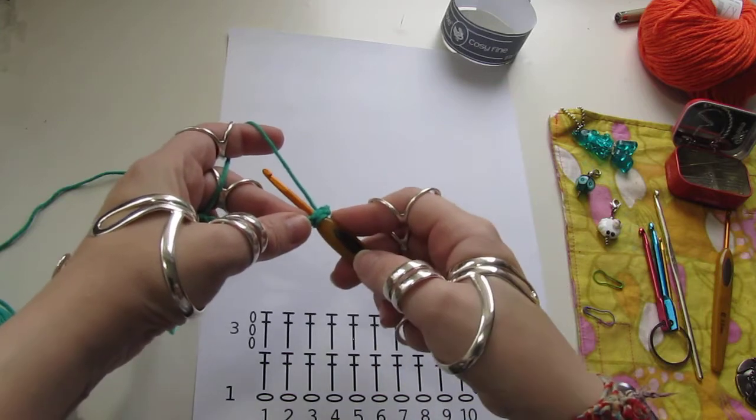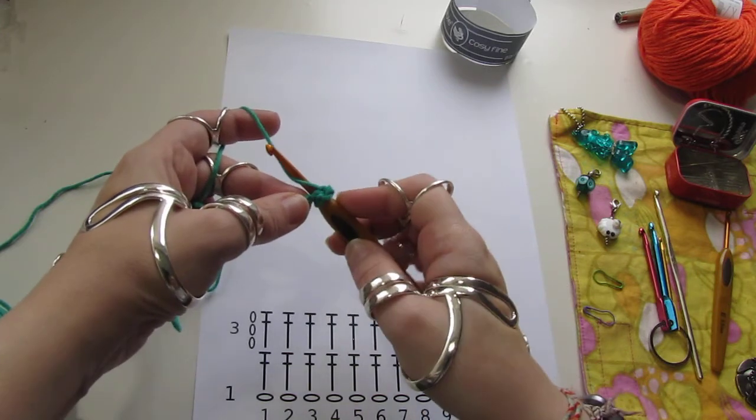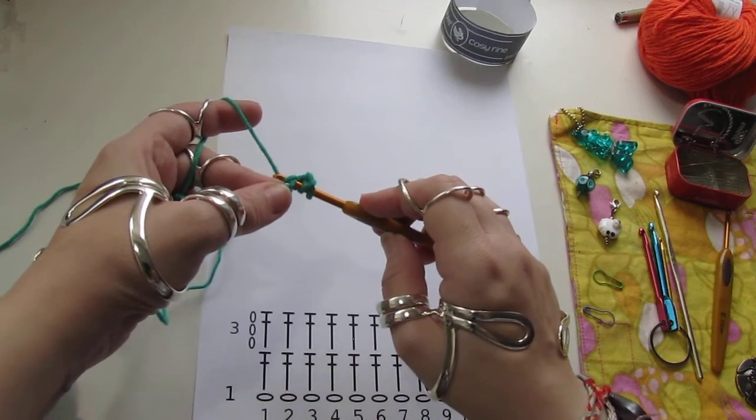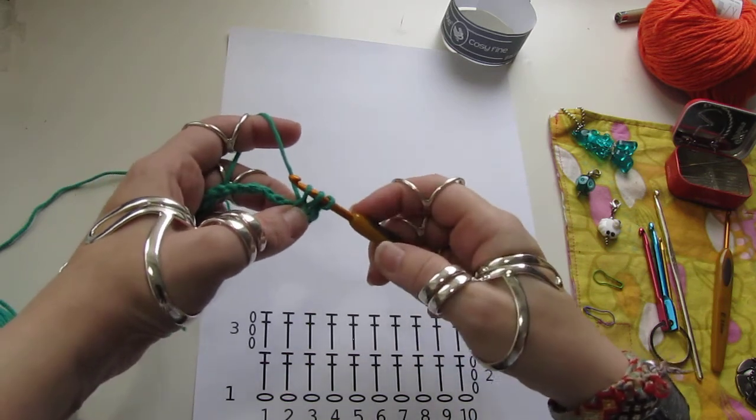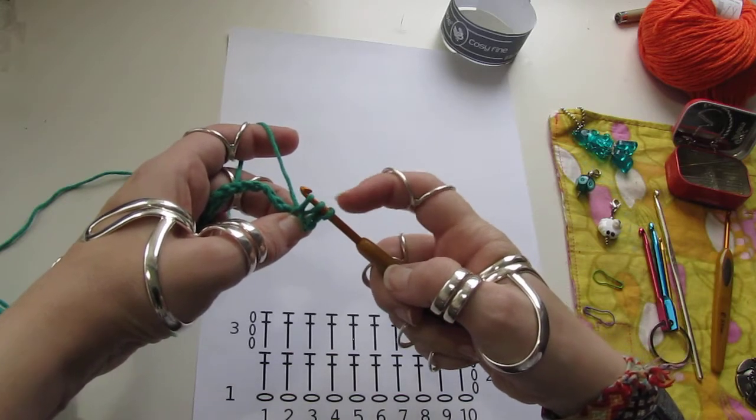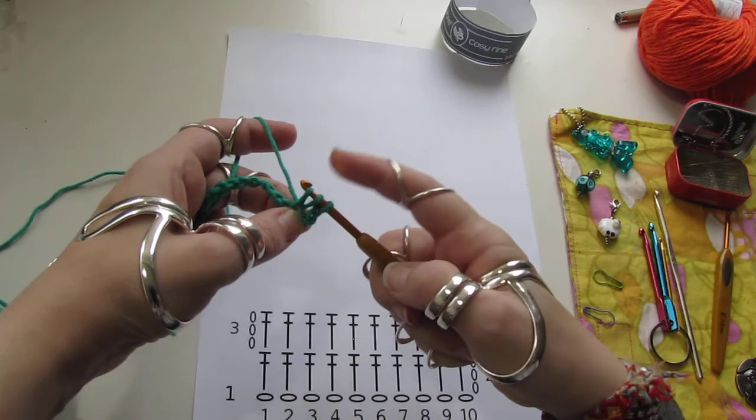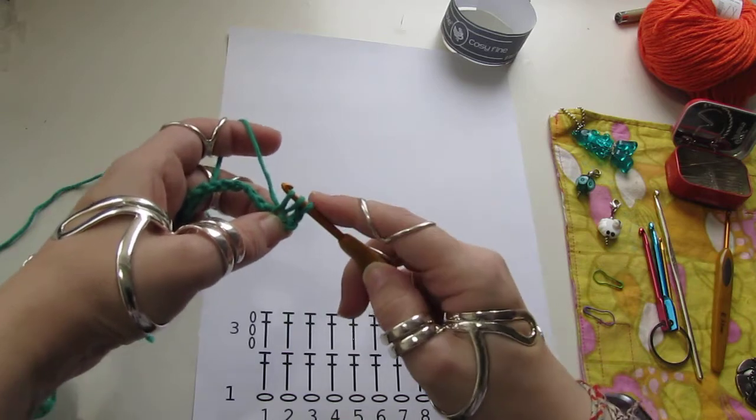Wrap the yarn around the hook. Hook the yarn and pull it through the stitch. You now have three stitches on the hook for the triple crochet.